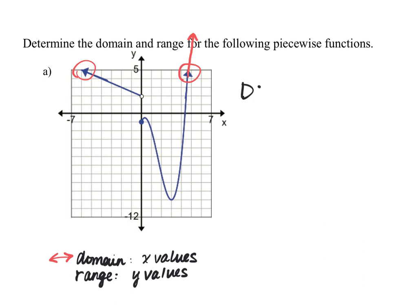When looking at our domain — I always use a big D for domain — it's all the x values. If you want to be fancy, you can say x is an element of, and then put our interval here. This element symbol just means x is an element of the interval that follows, so x can be any value in the interval we put in the blank.